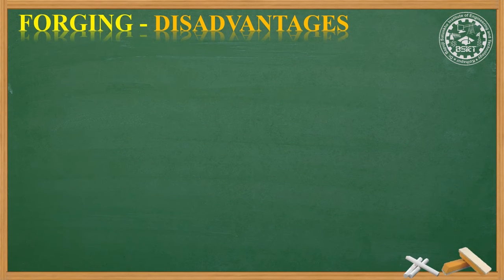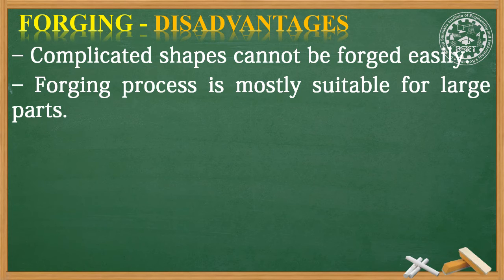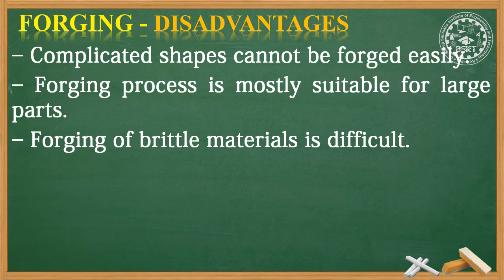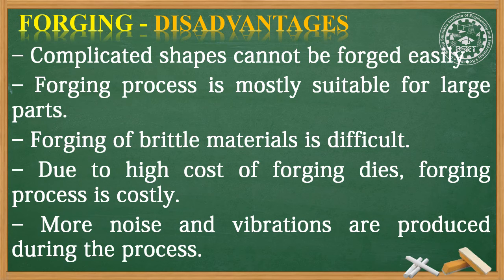Welding of forged parts is easy to be done. Coming to the disadvantages: complicated shapes cannot be forged easily. Forging process is mostly suitable for large parts. Forging of brittle materials is difficult. Due to the high cost of forging dies, forging process is costly. And more noise and vibrations are produced during the process.